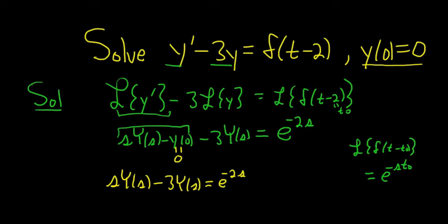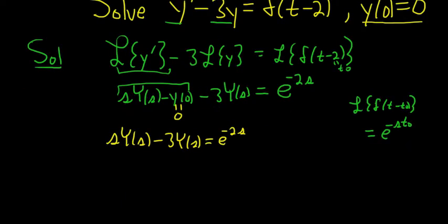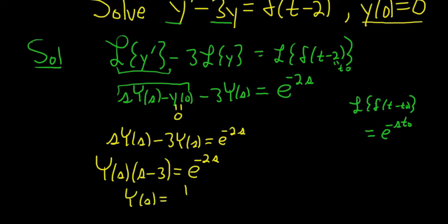Okay, almost there. Now we have to simply solve for big Y of s. So we'll pull out big Y of s. So this is s minus 3 equals e to the negative 2s. And then that will divide by s minus 3. So big Y of s is equal to 1 over s minus 3, e to the negative 2s.